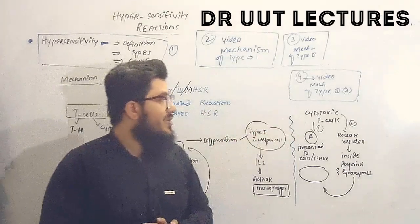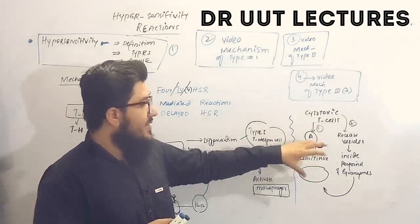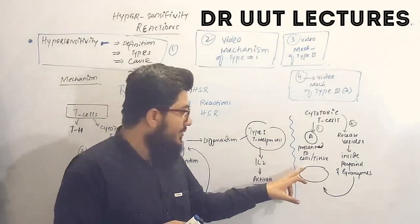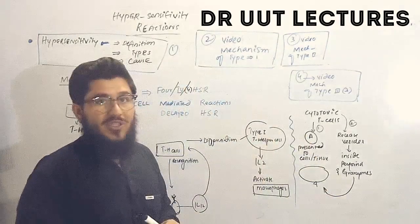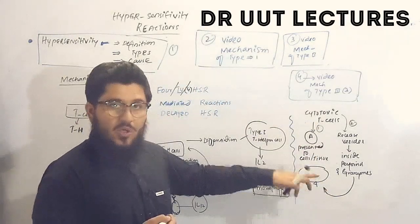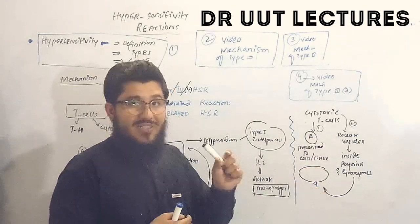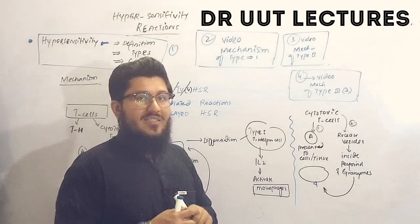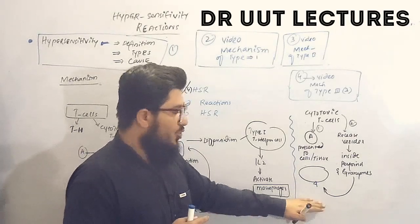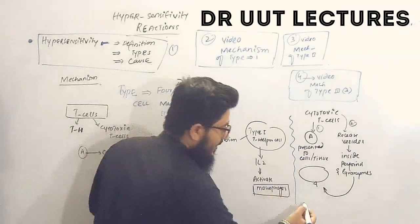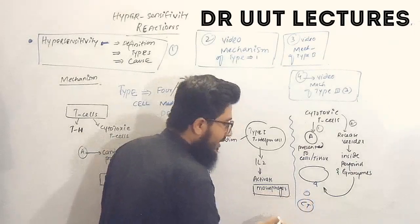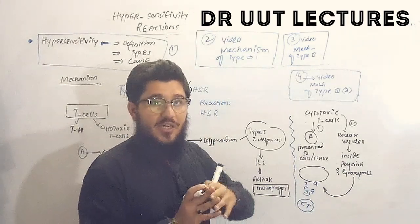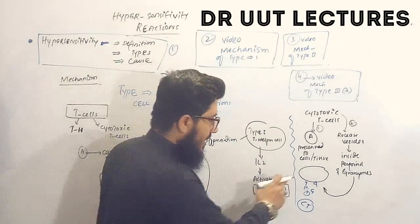Now let's look at the cytotoxic T cell mechanism. When cytotoxic T cells find an antigen present on the surface of a cell, they approach that cell and release vesicles. Inside these vesicles are perforins and granzymes. The perforins — as the name suggests — introduce perforations, creating pores in the target cell membrane.